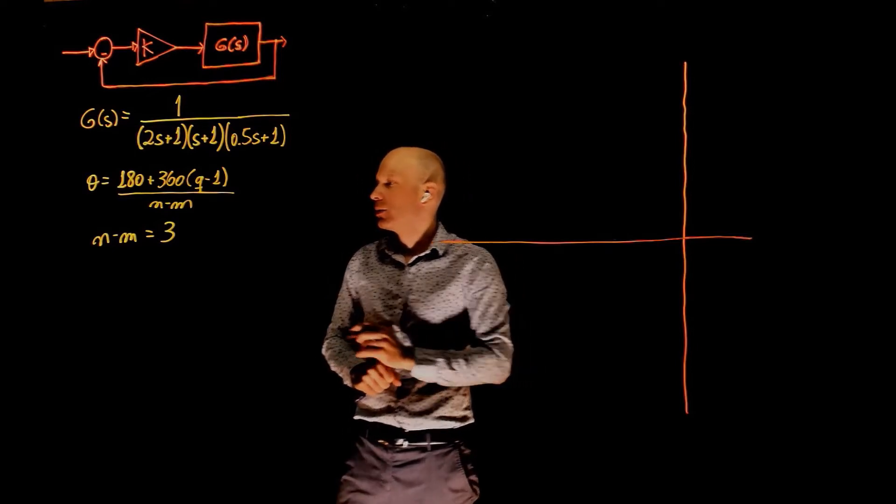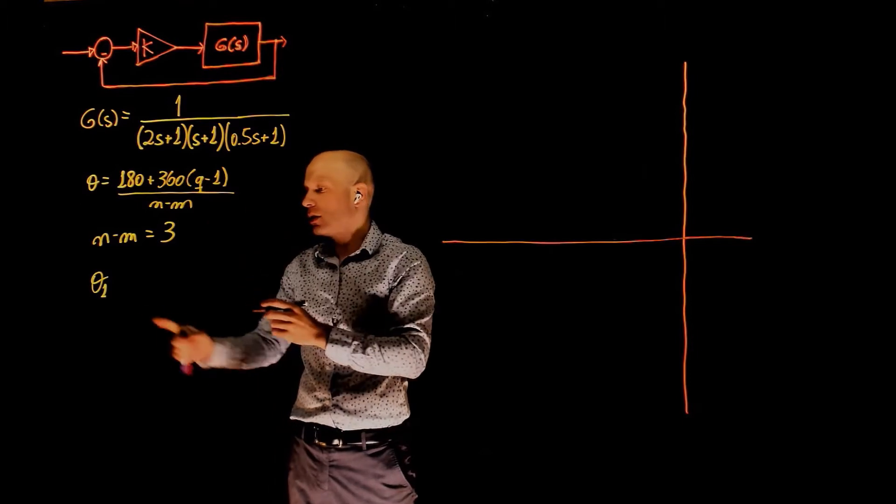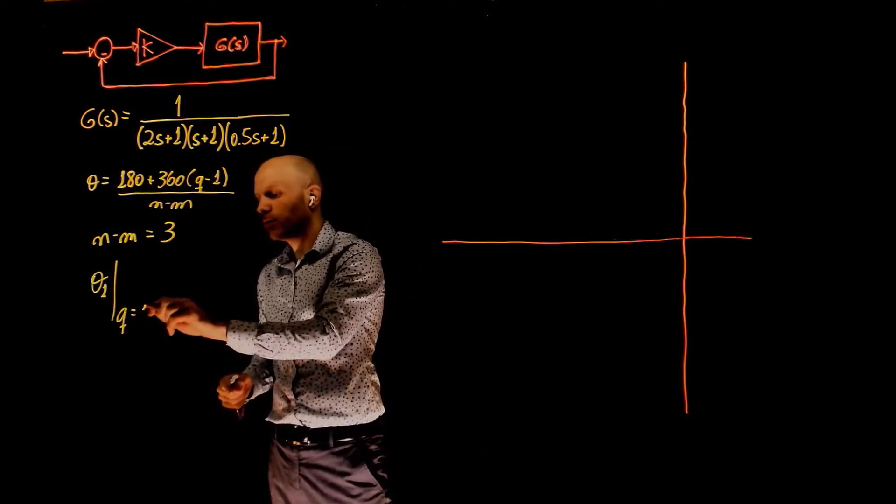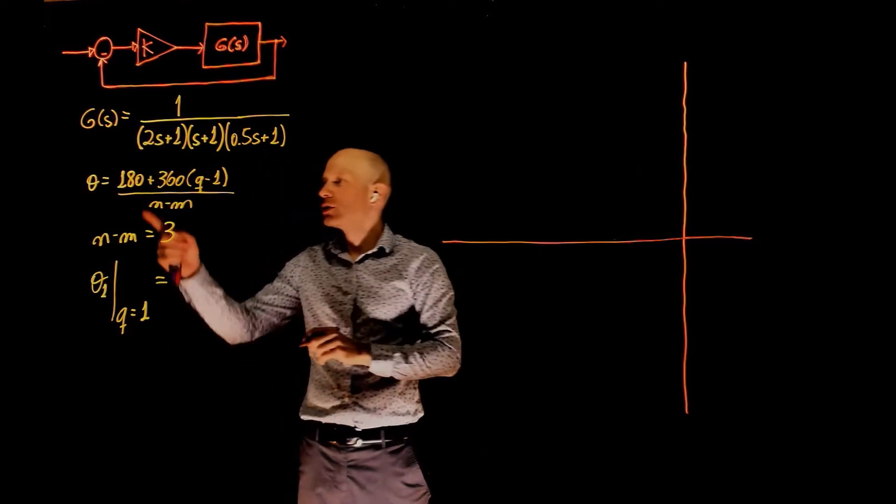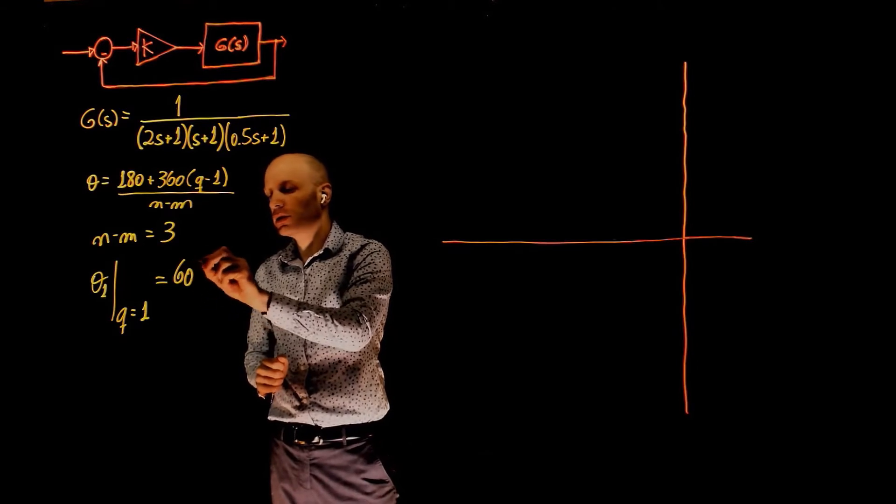The angle of these asymptotes can now be calculated by simply replacing q. So theta one is obtained when q equals to one, and this is 180 plus zero divided by three. This is 60 degrees.